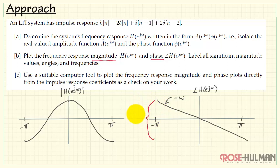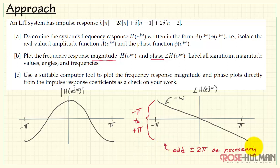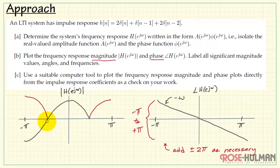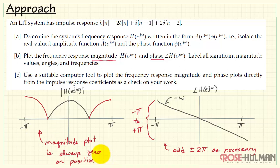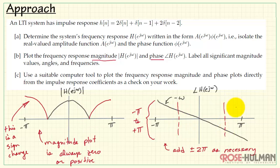We want the phase to exist in the range of minus pi to plus pi. We can add or subtract two pi as needed to ensure that the function lies within that range. It's important to recognize that magnitude is always zero or positive. Any time we have to change the sign to flip the negative portions of the magnitude response to go positive, we have to introduce a negative sign into the phase plot. The way we change sign is simply by adding or subtracting pi as needed.